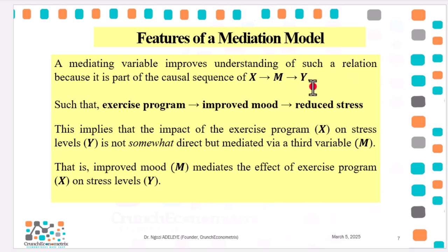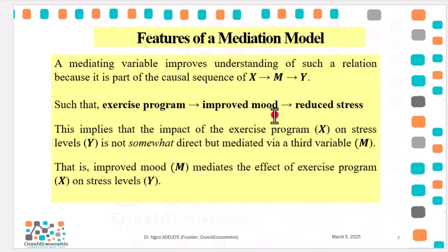A mediating variable improves understanding of such a relationship because it is part of the causal sequence — X will affect M, and M will affect Y. From this example, the exercise program will first lead to an improvement in mood, thereafter causing a reduction in stress levels. This implies that the impact of the exercise program on stress level is not entirely direct, but mediated through a third variable. In other words, improved mood mediates the effect of exercise program on stress levels.